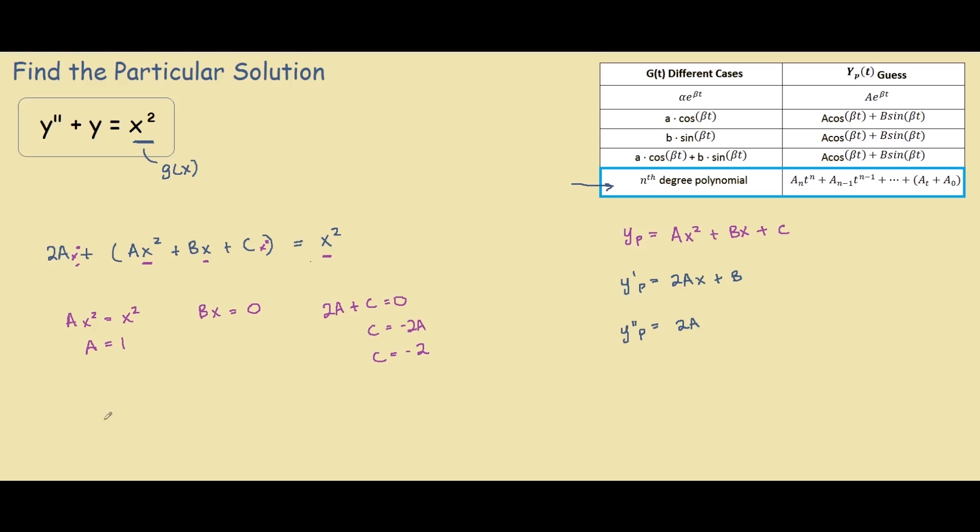So now that we have all our coefficients, we look at our y particular over here. And we found out that our y particular equals a, which is 1, so x squared plus bx, b is 0, so ignore that, and c is negative 2.